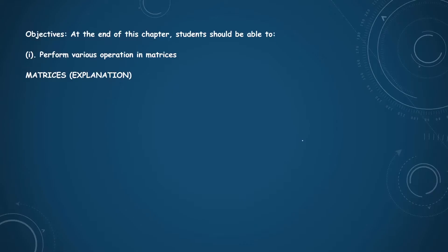What is a matrix? By definition, a matrix is a rectangular array of numbers in rows and columns. It is represented this way. We have A11, A12, A13, A21, A22, A23, A31, A32, A33.